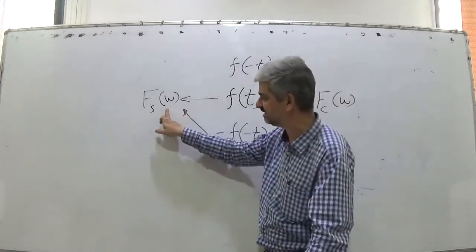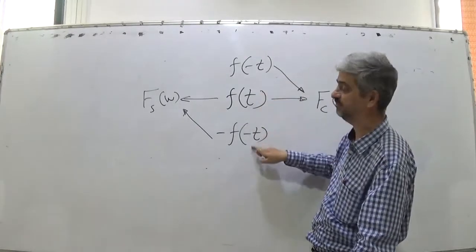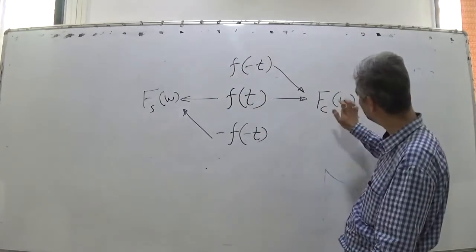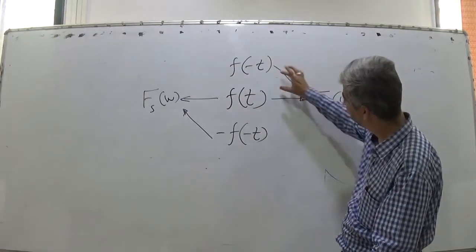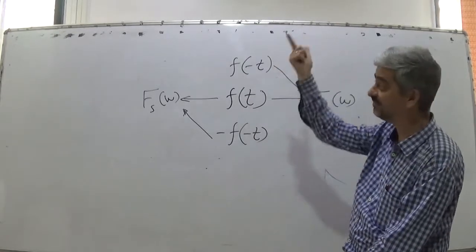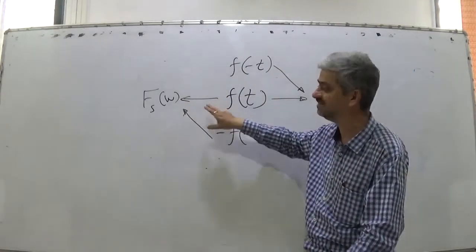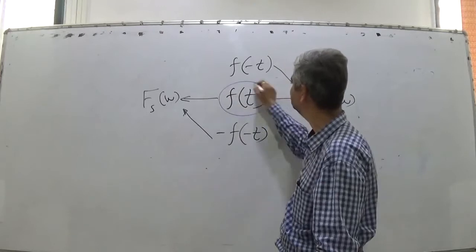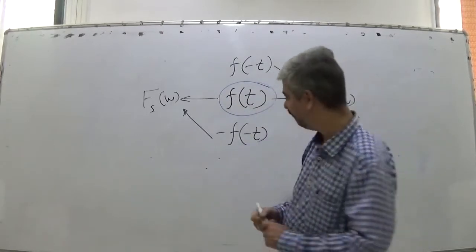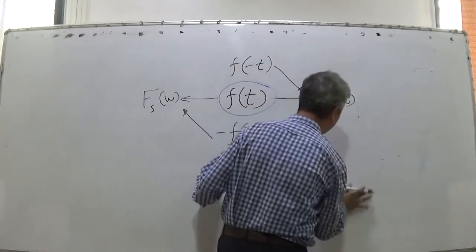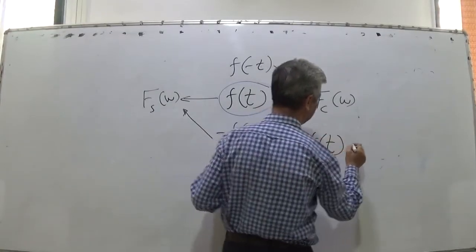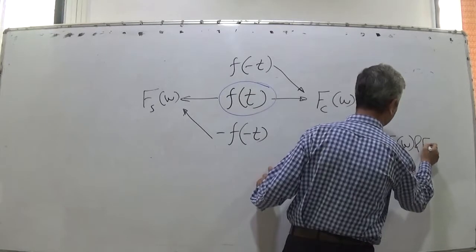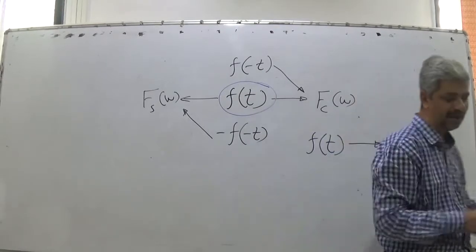But if I know both, a function whose cosine transform is this gives two answers, and a function whose sine transform is also this gives these two answers. And only this f(t) satisfies both of these. So if a combination f(t) gives rise to Fc(ω) and Fs(ω), the pair of transforms uniquely determines the function.